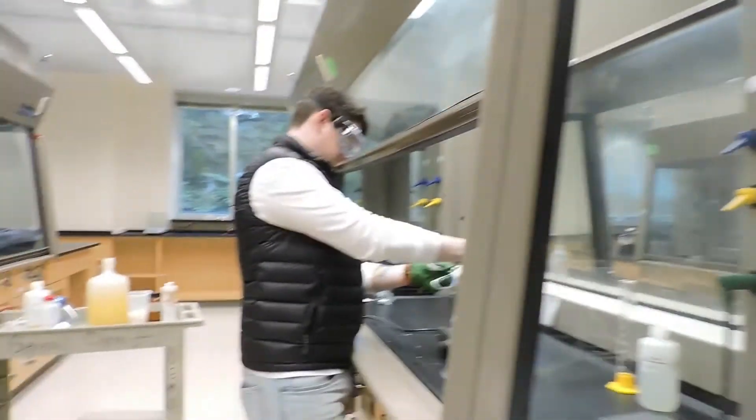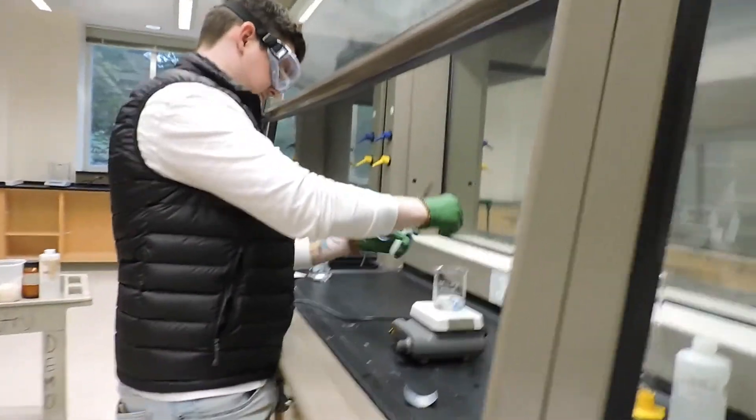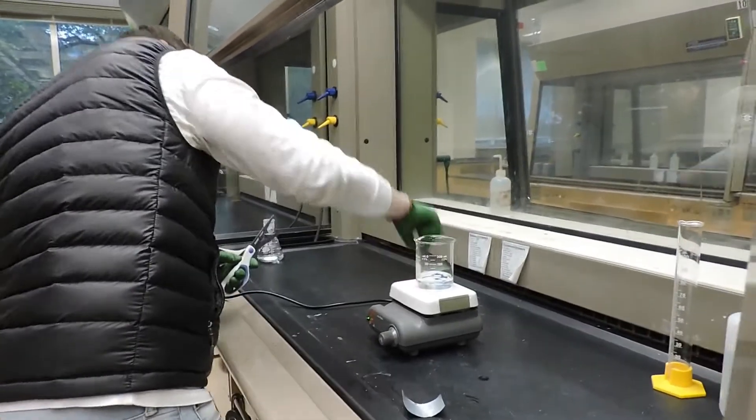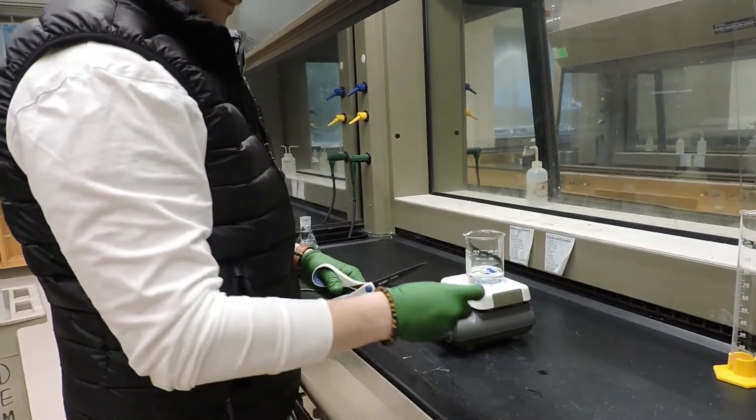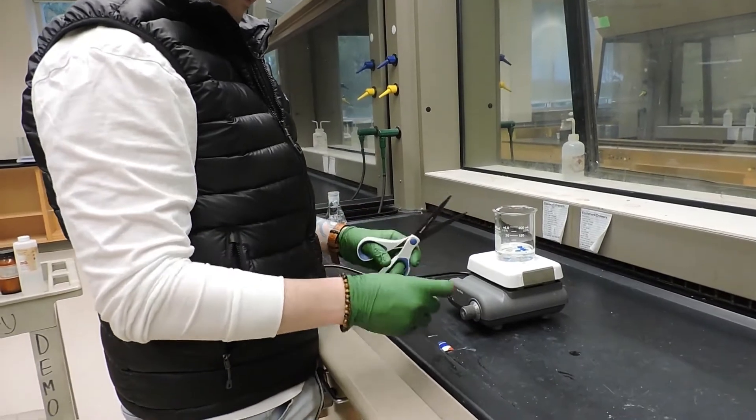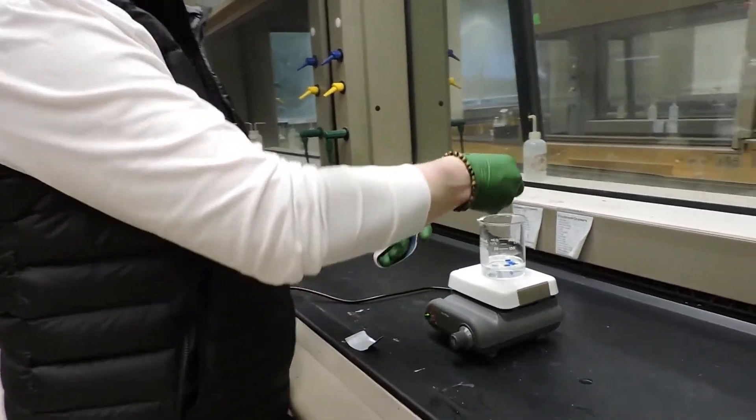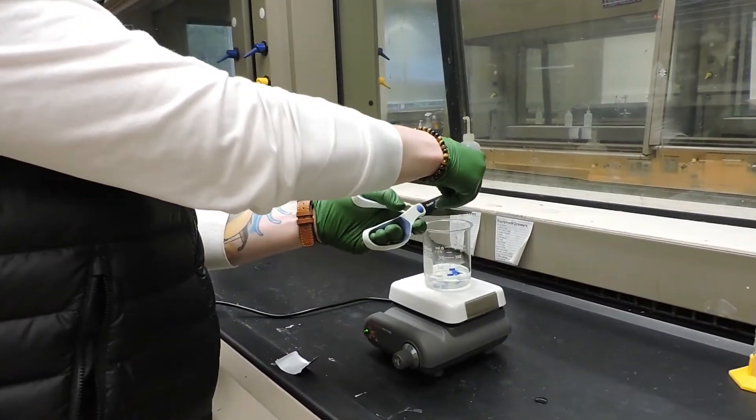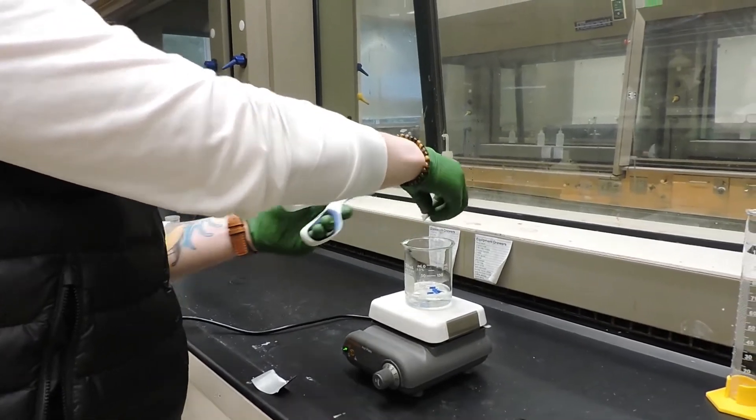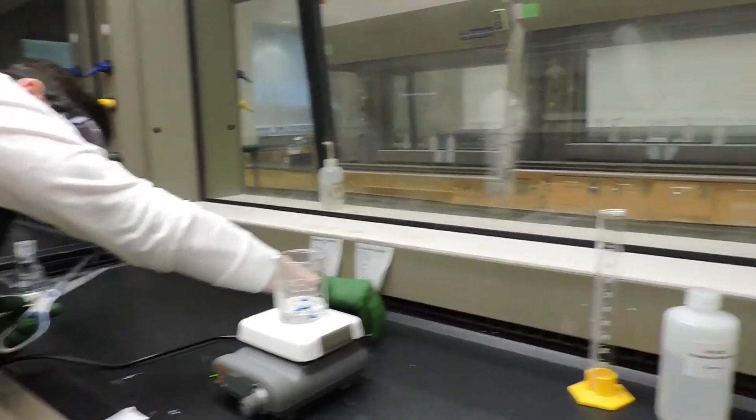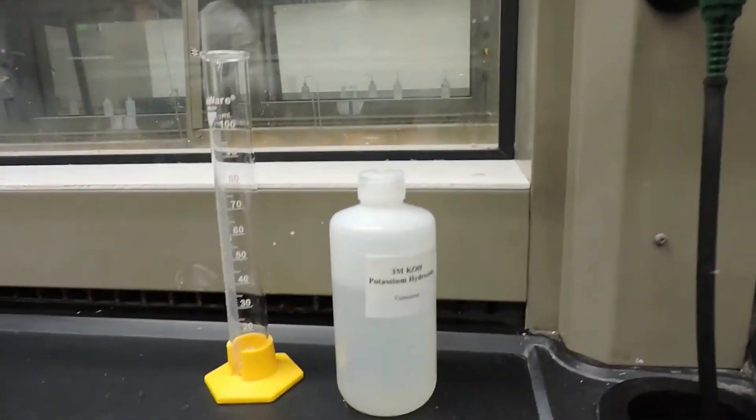So now he is cutting it into several small pieces, putting them into a clean 250 milliliter beaker. He has already added 25 milliliters of water and 25 milliliters of a 3 molar KOH solution.